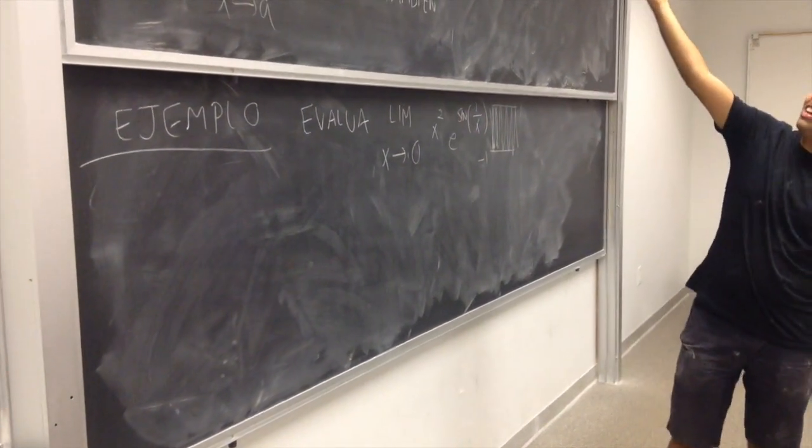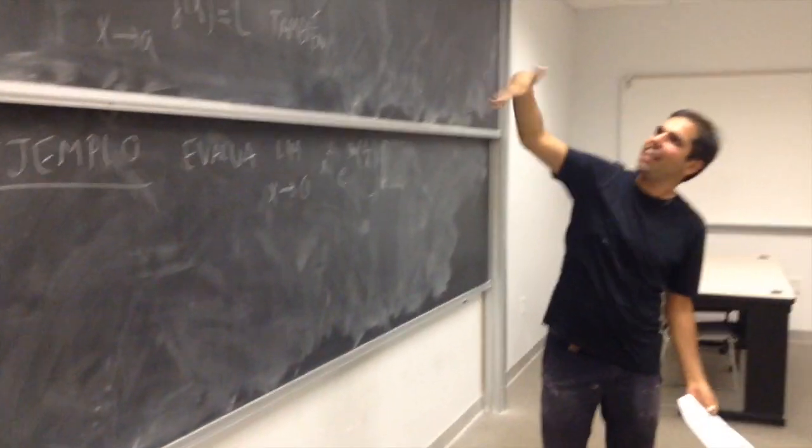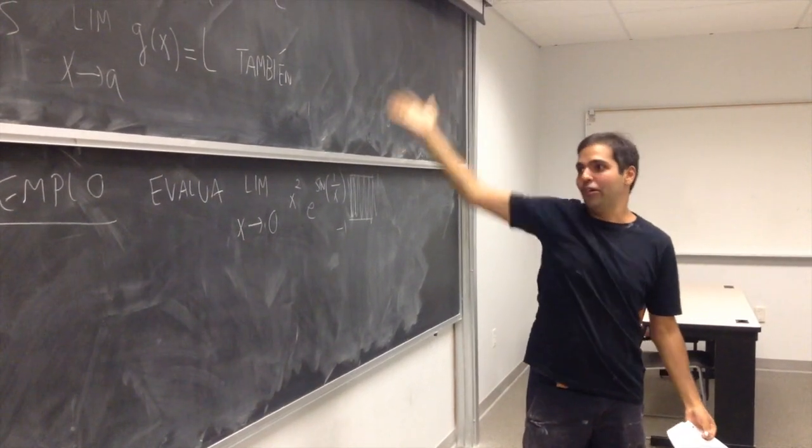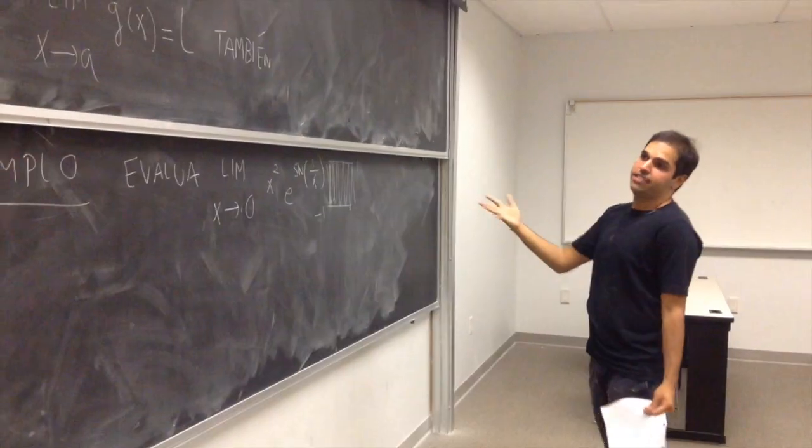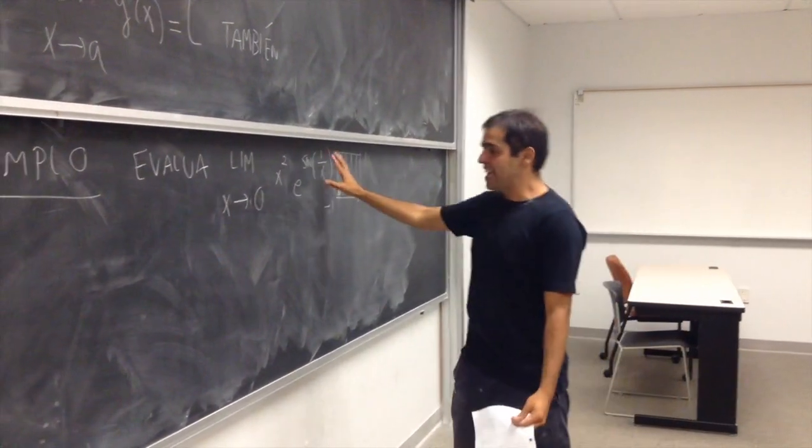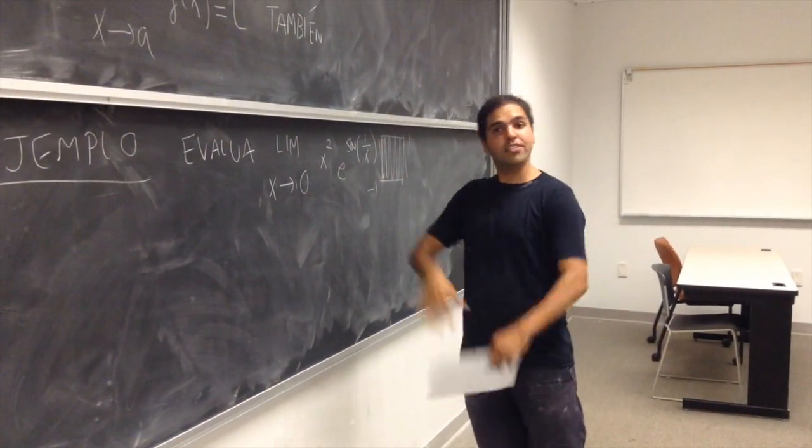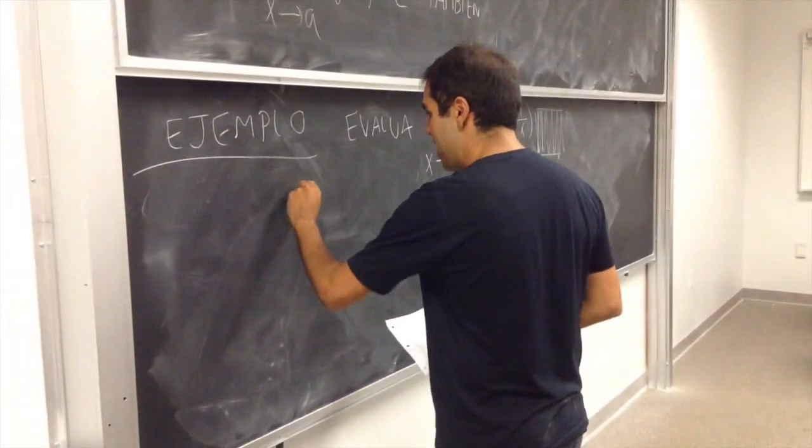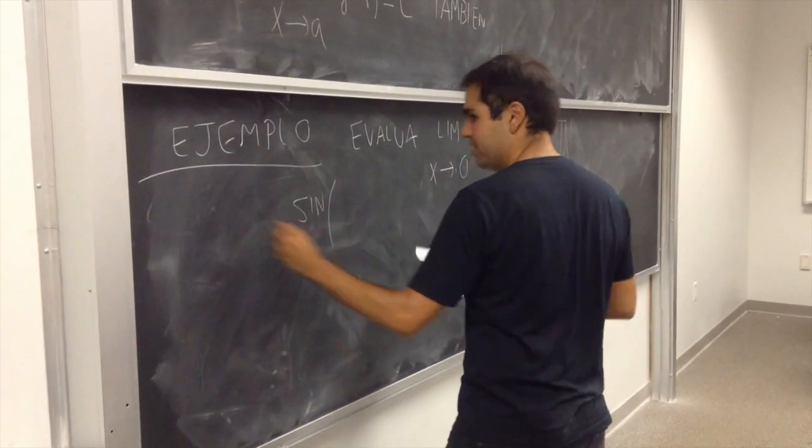¿Y cómo podemos evaluar este límite? Es una buena idea de utilizar el teorema del emparedado. Pero, una cosa que sabemos es que el seno de todas las cosas de todo el mundo es entre menos 1 y 1.